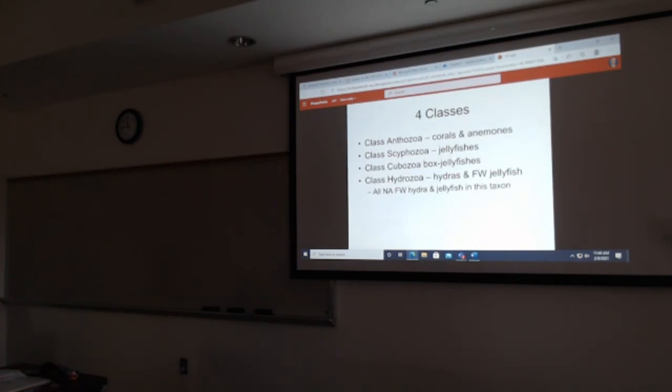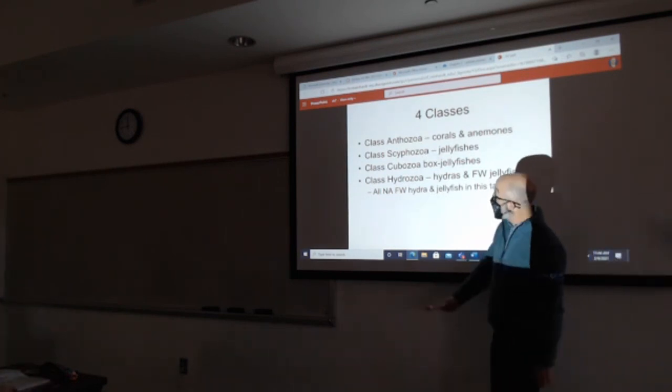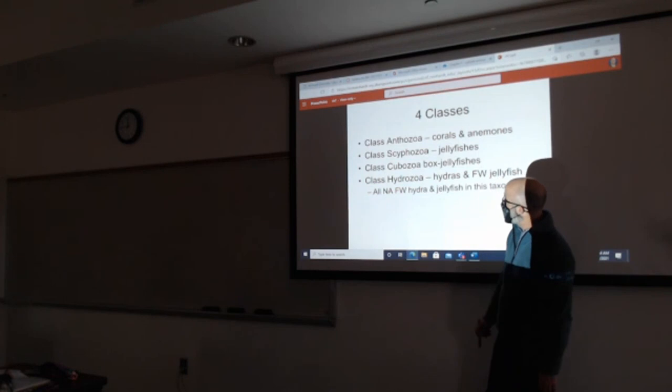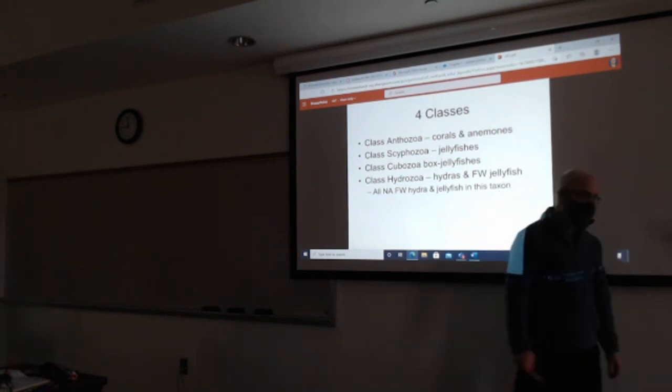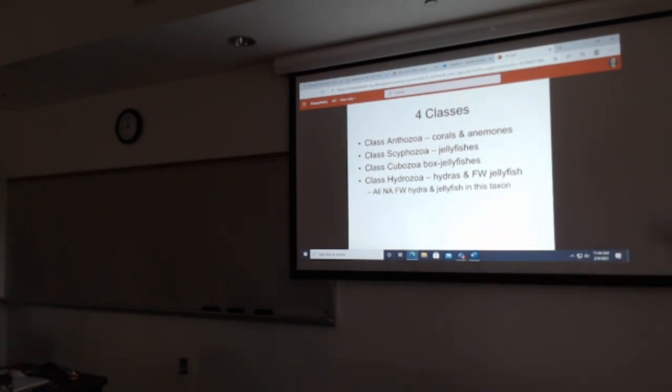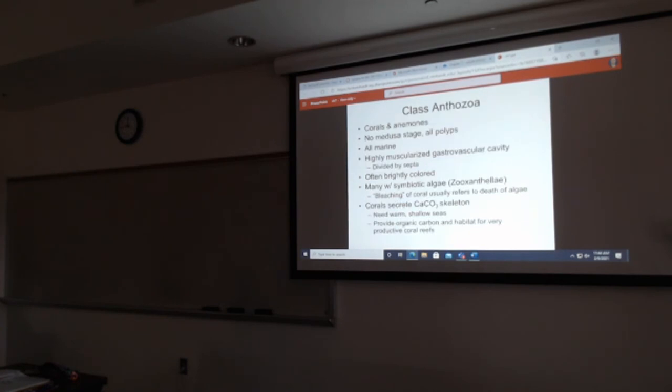Kingdom Animalia, Phylum Cnidaria, Class. You should know these four classes. Anthozoa, Scyphozoa, Cubozoa, Hydrozoa. Let me go through these briefly and introduce each of these classes. Antho means flower, I think. And this kind of helps me to remember because these guys are like flowers in their life. They are basically all polyp stage.